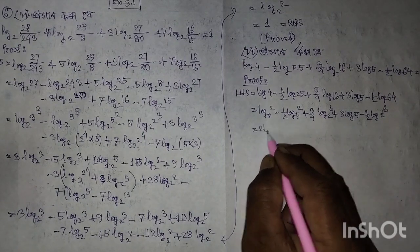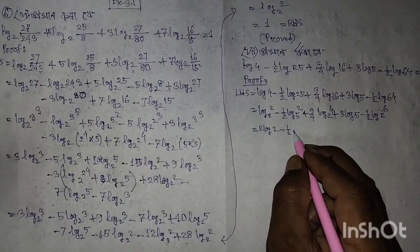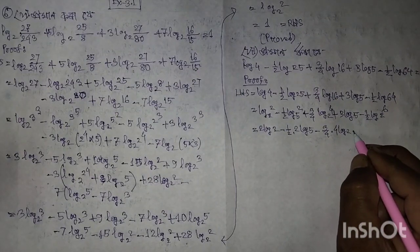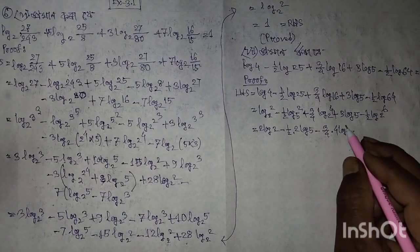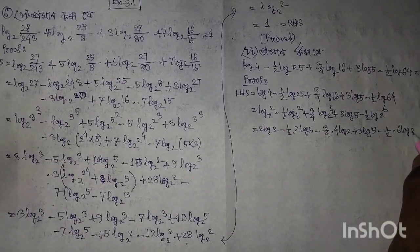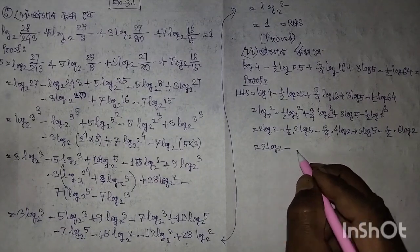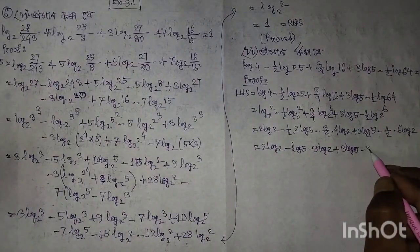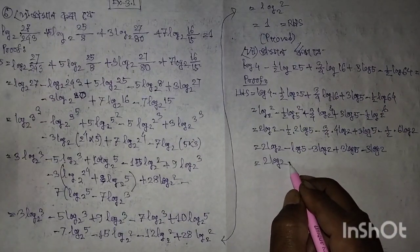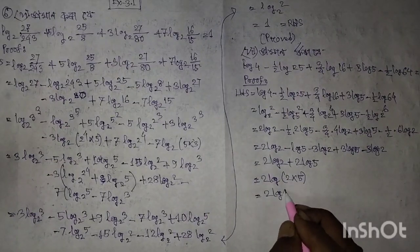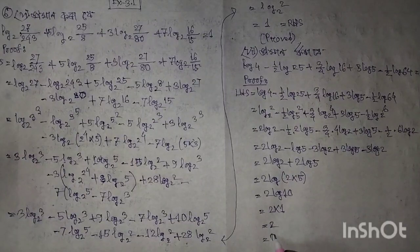Equal to 3 log 2, plus log 2, minus half into 2 log 5, plus 3 by 4 into 4 log 2, plus 3 log 5, minus half into 6 log 2. Equal to 3 log 2, minus 2 log 5, minus 3 log 2, plus 3 log 5, minus 3 log 2. Plus 3 log 5. Log 2 is equal to twice log 2, minus x, plus twice log 5. Is equal to twice log 2 into 5, is equal to twice log 10, is equal to 2 into 1, is equal to 2. Equal to right hand side. Proved.